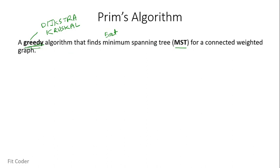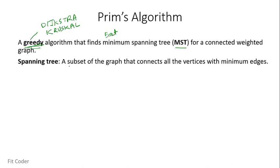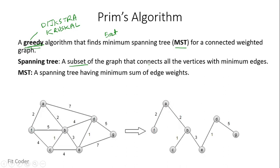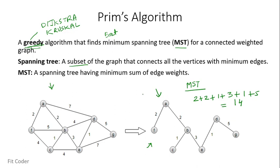The other key term is MST, or minimum spanning tree. A spanning tree is a subset of the graph that connects all the vertices with minimum edges. A minimum spanning tree is a spanning tree which has the minimum sum of edge weights. For example, we are given a graph with 7 vertices, and the MST of this graph connects all vertices with minimum edges. The sum of the weights is 14, so this is the minimum spanning tree. Both Kruskal's and Prim's algorithms help us find the minimum spanning tree.